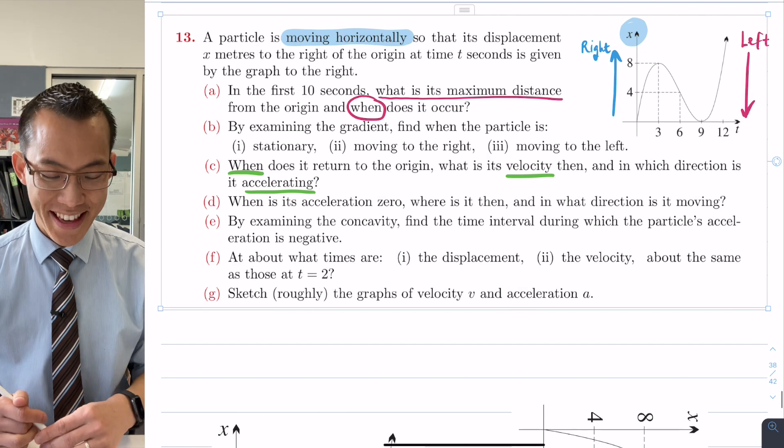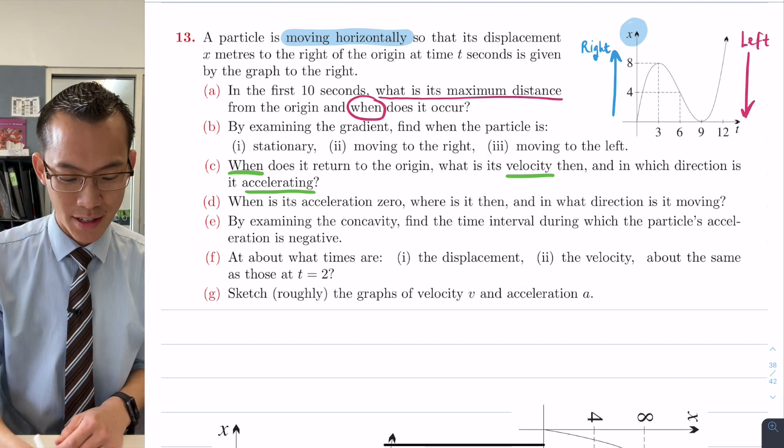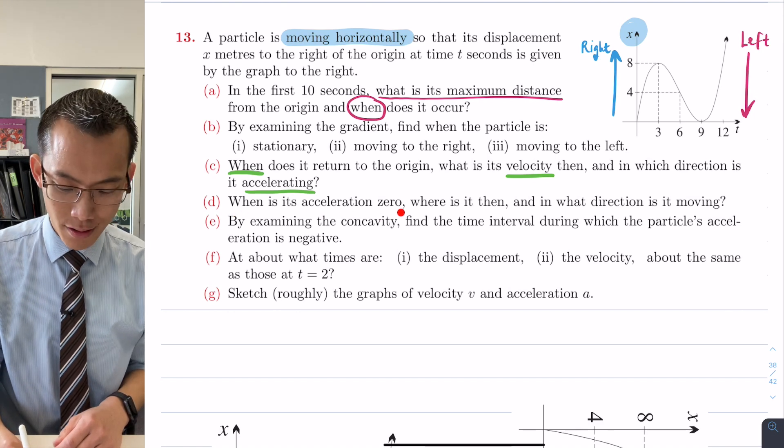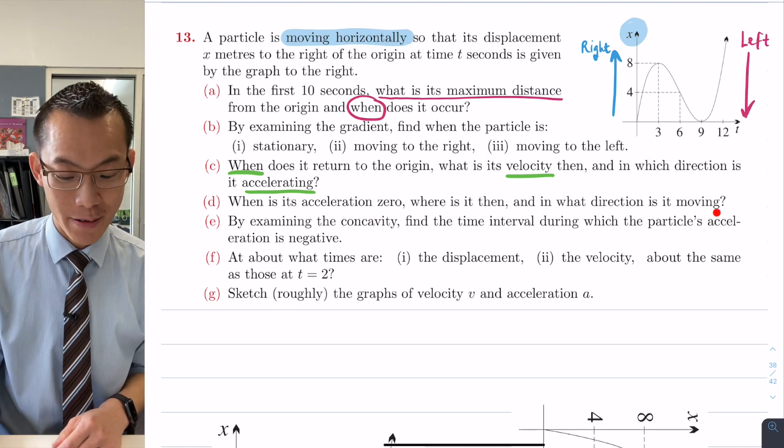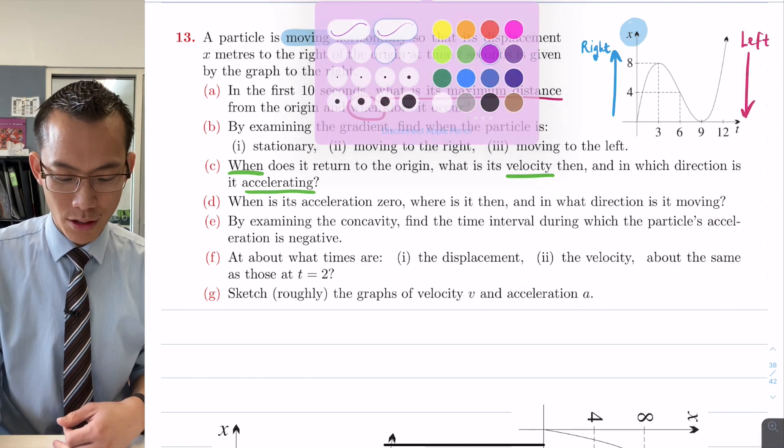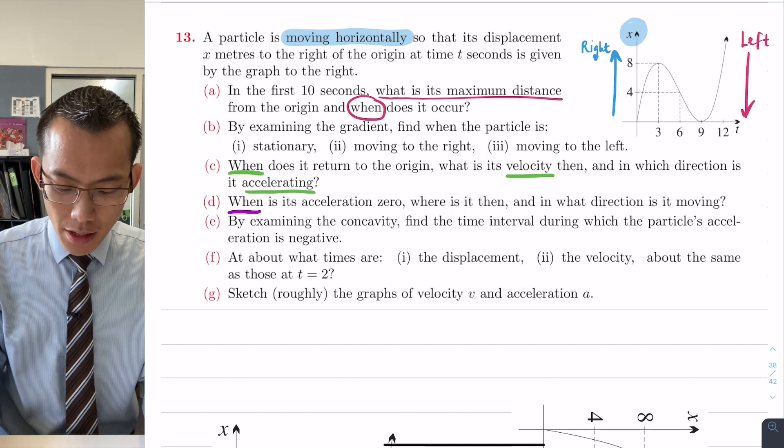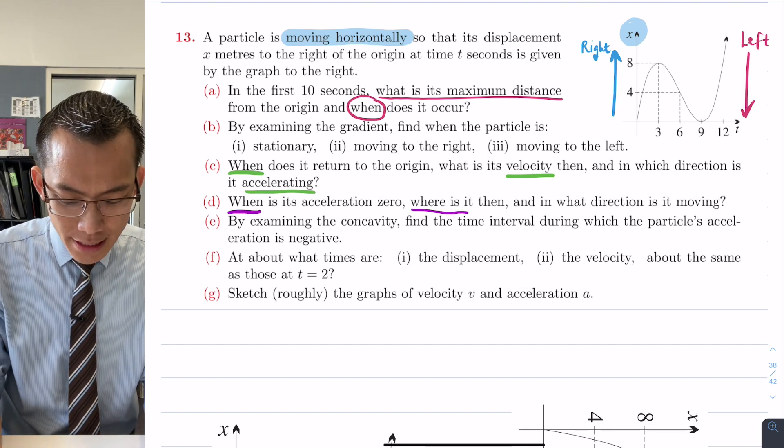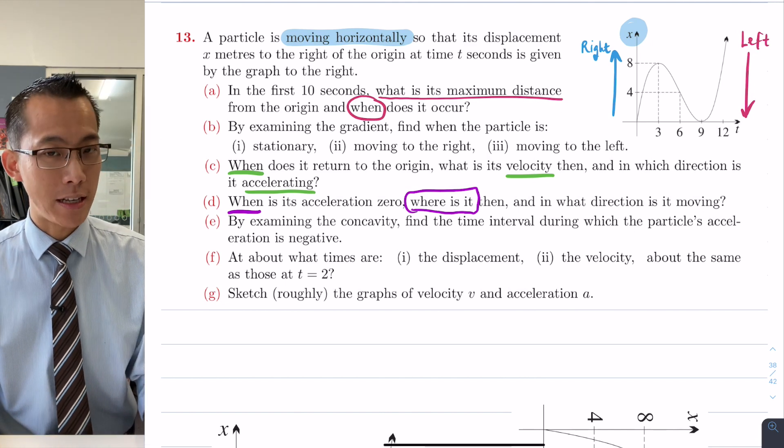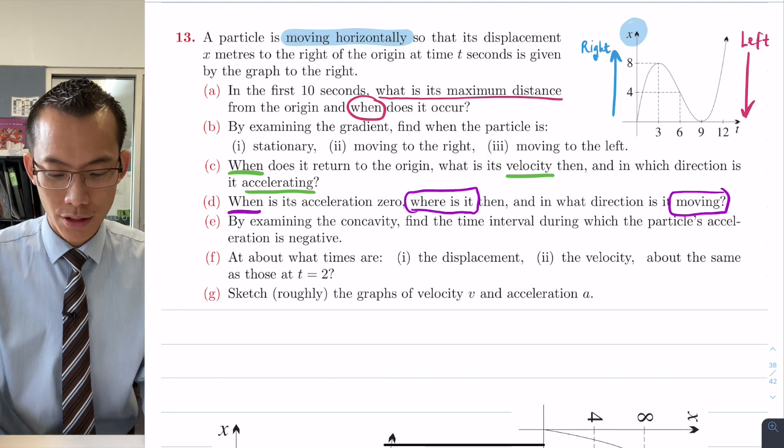Okay, so that was part C, we're almost the halfway mark, so this next question says, when is its acceleration 0, where is it then, and in what direction is it moving? So another triple-barreled question here, so you can see here, I'm being asked when, another time, where is it, so that's a displacement question, and then in what direction is it moving, that's a velocity question.